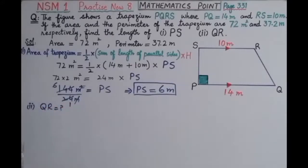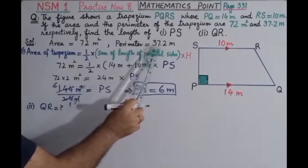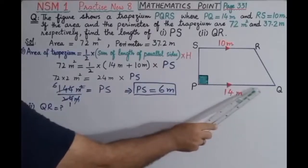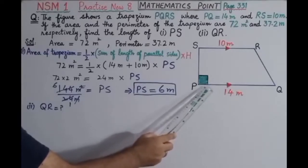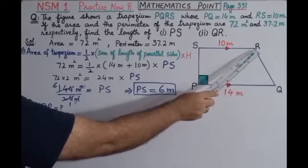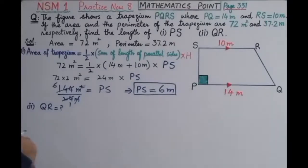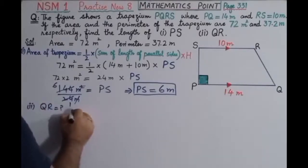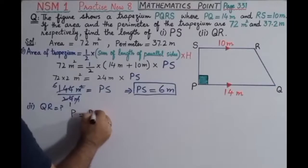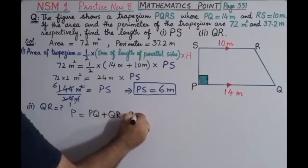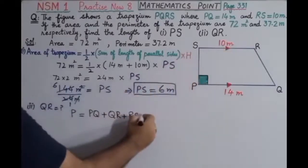The perimeter of this trapezium is also given as 37.2 meters. The perimeter is the total length of the outer boundary. This trapezium has four sides: PQ, QR, RS, and PS. So we write: Perimeter equals PQ plus QR plus RS plus PS.